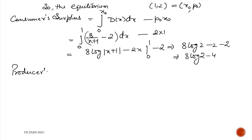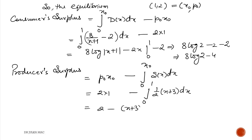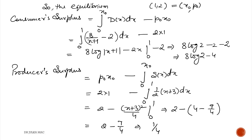Now for producer surplus. Producer surplus = p0·x0 − integration from 0 to x0 of the supply function dx. With p0 = 2 and x0 = 1: producer surplus = 2×1 − integration from 0 to 1 of (x/2 + 3) dx. The integral of (x/2 + 3) gives (x+3)²/4, evaluated from 0 to 1. After calculation, producer surplus = 1/4.